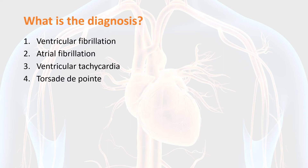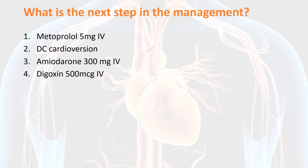The next question is: what is the next step in the management? Please pause the video to go through the options. The correct answer is again the third option, which is amiodarone 300 milligrams IV. To find out why this is the right answer, let's learn about broad complex tachycardia in some detail.